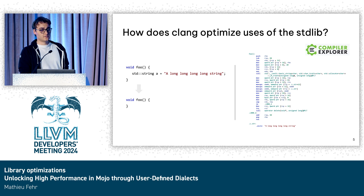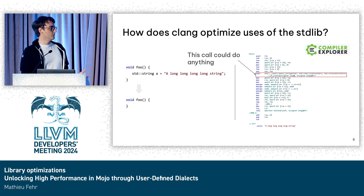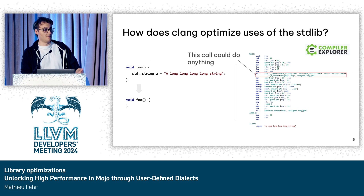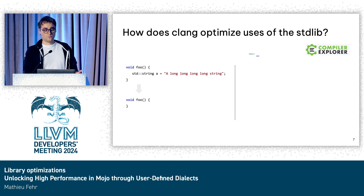It turns out that the reason this is not optimized, at least in C++17, is because there is one function call that doesn't get inlined. And because it isn't inlined, the compiler cannot actually deduce that this is just a malloc and that there's nothing really important going on there. So it turns out that if we manage to inline this, everything gets eliminated and everything works.